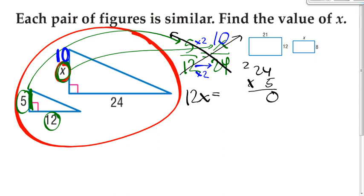4 times 5 is 20, carry the 2. 2 times 5 is 10, plus 2 more makes 12. So now we're at 12x equals 120.